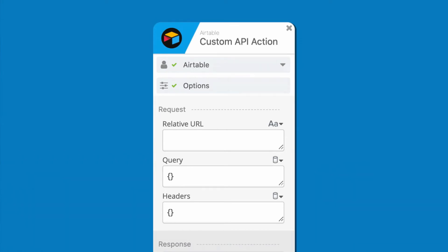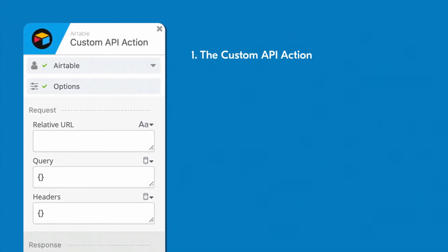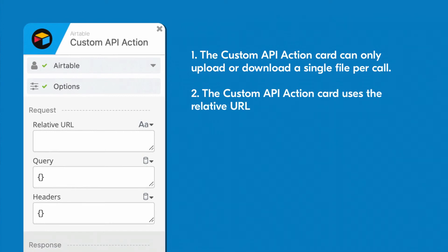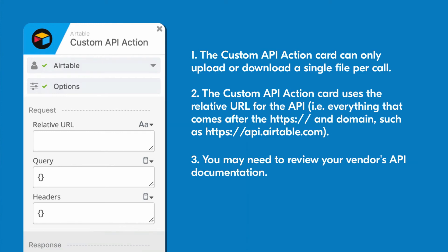You'll want to keep a few things in mind when working with this card. First, it can only upload and download a single file per call. Second, we only ask for the relative URL — you don't need the fully resolved URL because that's already configured with the connector. Finally, you may need to review your vendor's API documentation. Sometimes this information isn't publicly available, so be sure to check with your vendor if you can't locate API documentation on your own.